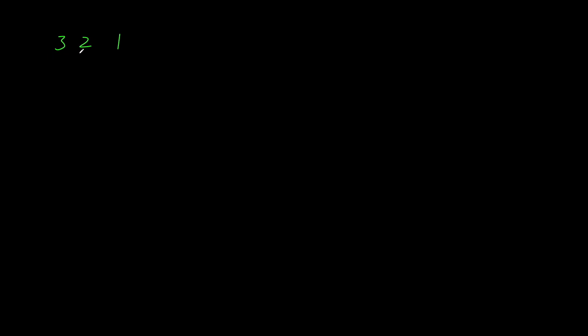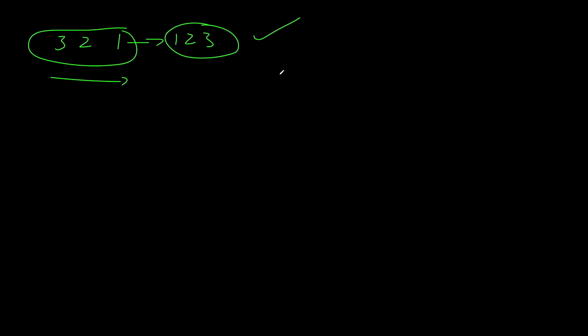So let's think about the two cases that can happen in this problem, which the problem description tells us. The first is that there actually is no next permutation. This is the case where we have something like 3,2,1. Because this is already the largest number we can get by rearranging these three numbers, the next permutation is just going to be the wraparound — basically it becomes the smallest number we can get. So if our input is sorted in descending order from left to right, we just return the reverse of our input and that's our answer.